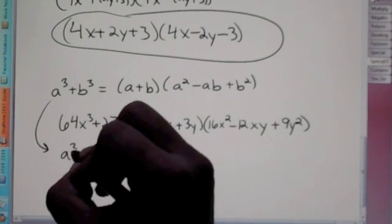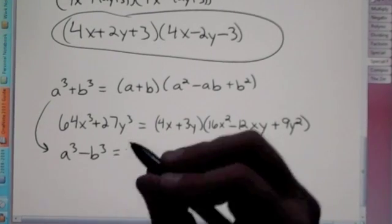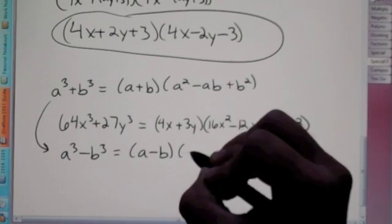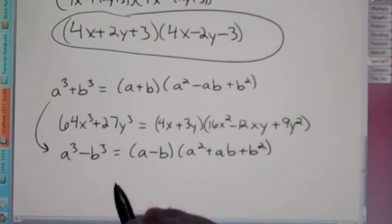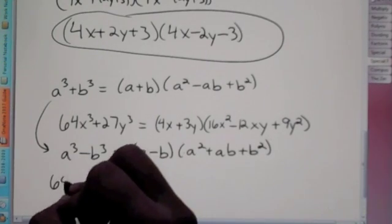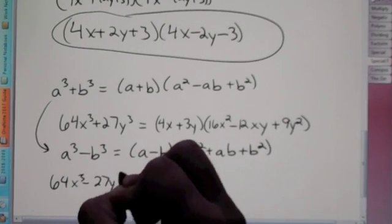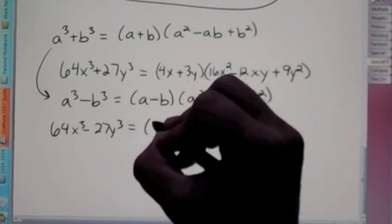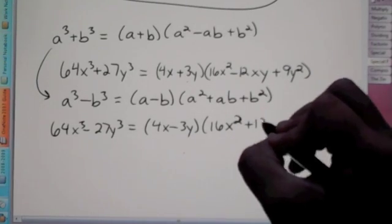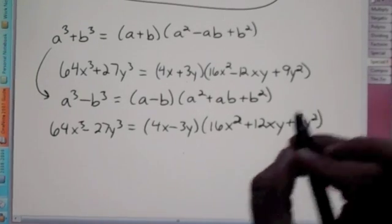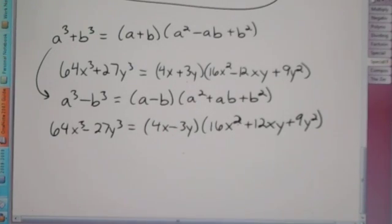In like manner, if you have a cubed minus b cubed, we can rewrite this as (a - b)(a squared plus ab plus b squared). So the symbols switch compared to the sum of cubes format. Watch this as many times as you need, and ask questions if you need help. Good luck!